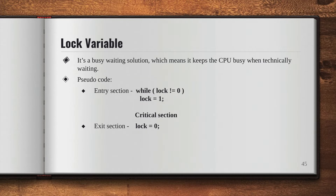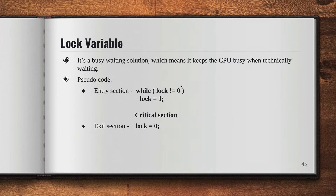Let's say there is a process P1. If the lock value is zero it means the critical section is vacant, and if the lock value is one it means the critical section has some process currently running. Initially the value of the lock variable will be set to zero.